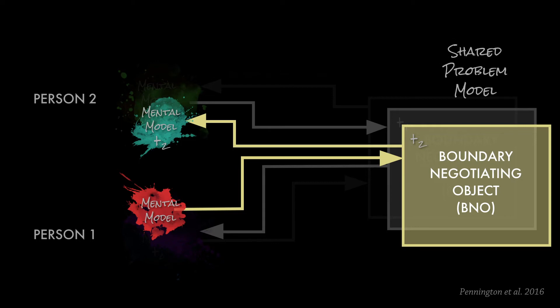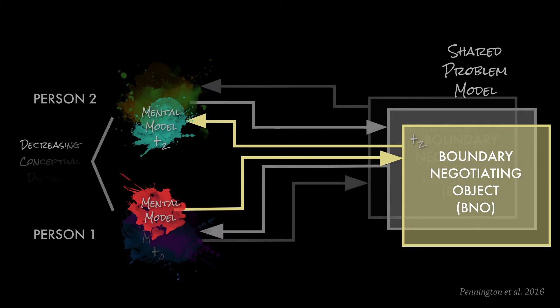This process can go on for any number of iterations. You might spend an hour iterating over different versions of the same boundary negotiating object. Pretty soon everybody steps back and says, 'Yeah, that captures my mental model and what I hear everybody else saying.' And so that's your shared problem model — your shared vision — the thing that helps you figure out what research you can do together. What has actually happened is that you had some starting conceptual distance between your disciplines, which can be short for similar disciplines or large for very dissimilar ones. But as you evolve these mental models toward one another, you get decreasing conceptual distance that makes it easier to find common ground and linkages across disciplines.